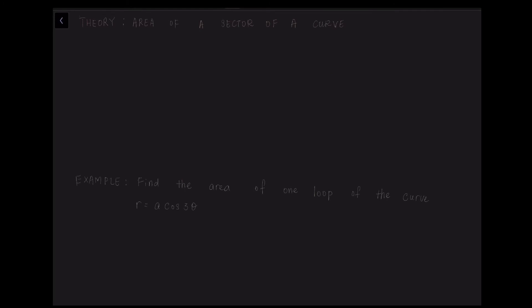Next, we look at how to find the area of a sector of a curve using polar coordinates. The general formula for the area of a sector is A equals one half times the integral of r squared d theta, with boundaries theta equals alpha and theta equals beta, since we are integrating with respect to d theta.